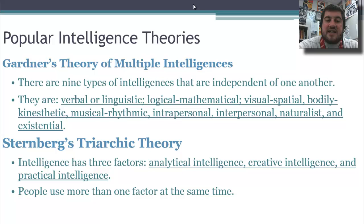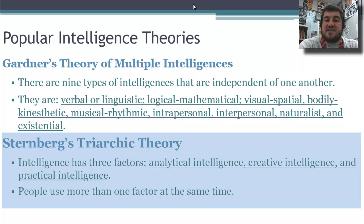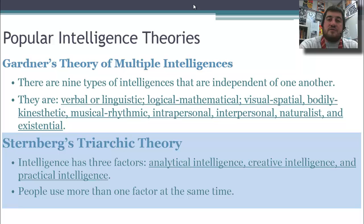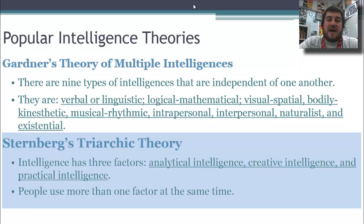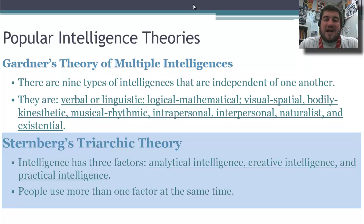Sternberg in the 80s put forth the triarchic theory, saying that intelligence is comprised of three factors: analytical, creative, and practical. Analytical is what we use in school. Creative intelligence is how creative you are, and practical intelligence is how you solve issues and work with people — knowing what to do in specific situations. People use more than one factor at the same time, but may favor one. For example, my wife can create a meal from a list of ingredients, whereas I need step-by-step instructions, so my analytical intelligence is higher while her creative and practical intelligence is higher.